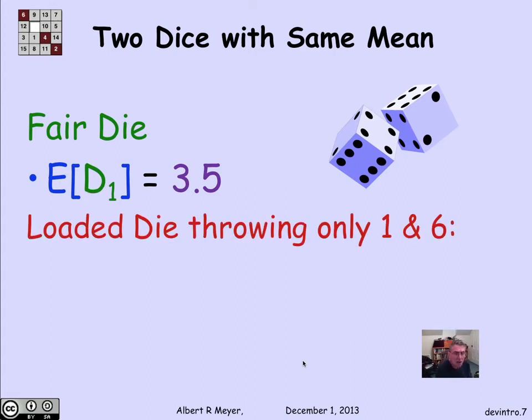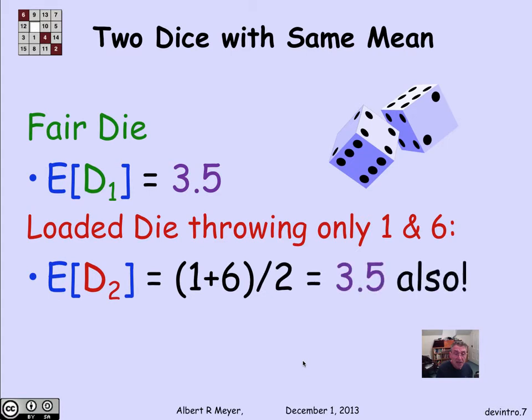Now, suppose I look at a loaded die, die 2, which only throws a 1 or a 6 but with equal probability. Then its expectation is also 3 and 1 half by the same reasoning. So here are these two different die. One takes the values 1 through 6 equally likely, and the other takes only the two values, 1 and 6. But they have the same expectation.